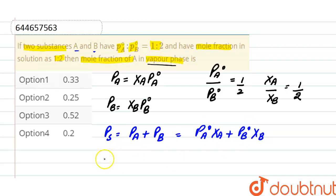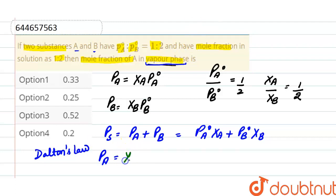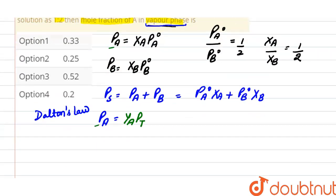According to Dalton's law, the partial vapor pressure of substance A in vapor phase equals mole fraction of A in vapor phase multiplied by total pressure. Equating both expressions for partial pressure of A: mole fraction of A in liquid phase × PA° equals mole fraction of A in vapor phase × total pressure.